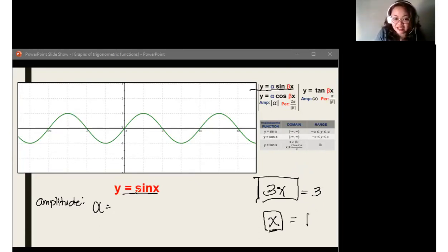Balikan nyan natin itong given natin. Sine x. Walang nakalitao. What's the numerical coefficient? Very good. Therefore, dahil walang nakalitao ng numerical coefficient si sine, ang alpha value mo ay 1. Same concept lang nito. Okay?